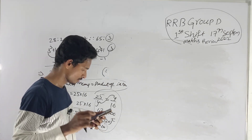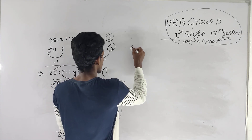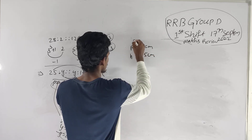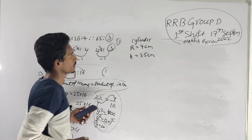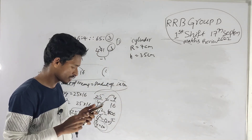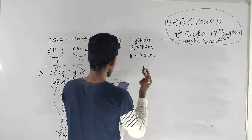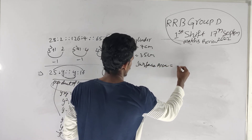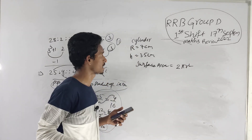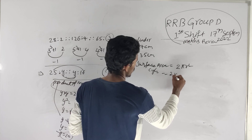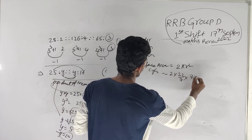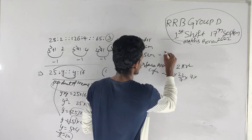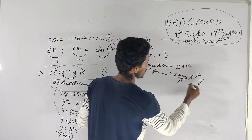Next question: a cylinder with radius 7 cm and height 3.5 cm. We need to find the curved surface area. The formula is 2πrh. So 2 × (22/7) × 7 × 3.5, where 3.5 equals 7/2.